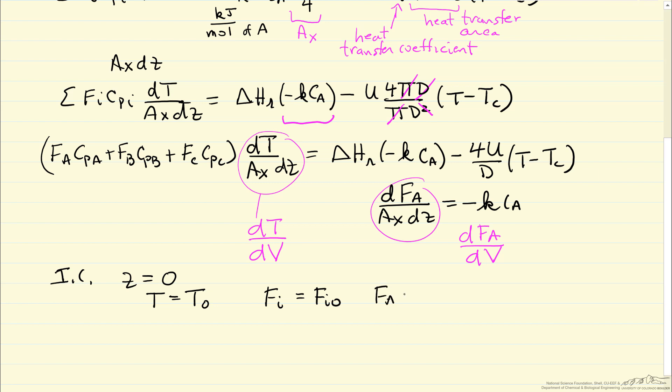So flow rate of A, A zero, flow rate of B, B zero, and in this case, flow rate of C would be zero.